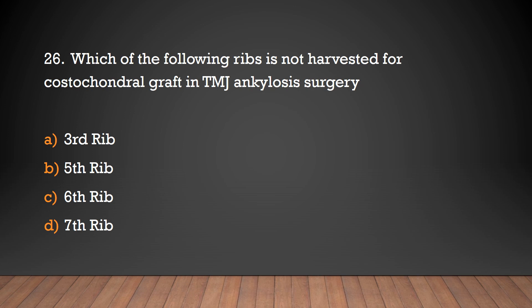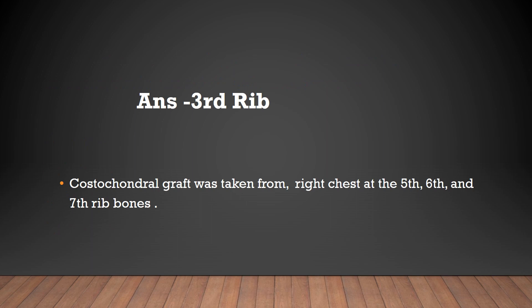Which of the following ribs is not harvested for costochondral graft in TMJ ankylosis surgery: 3rd rib, 5th rib, 6th rib, or 7th rib? The answer is the 3rd rib. Costochondral grafts are taken from the right chest at the 5th, 6th, and 7th rib junctions.